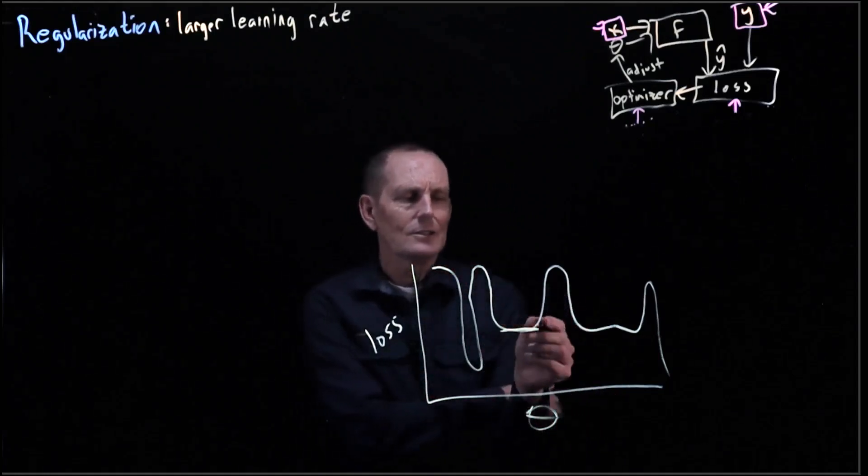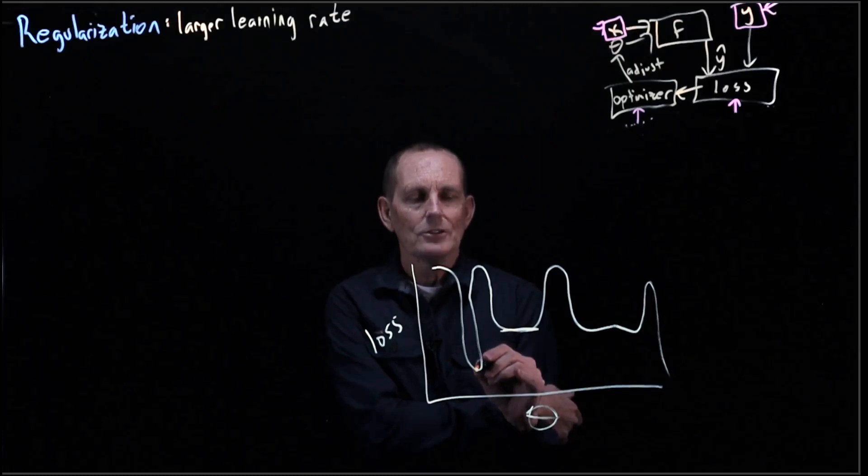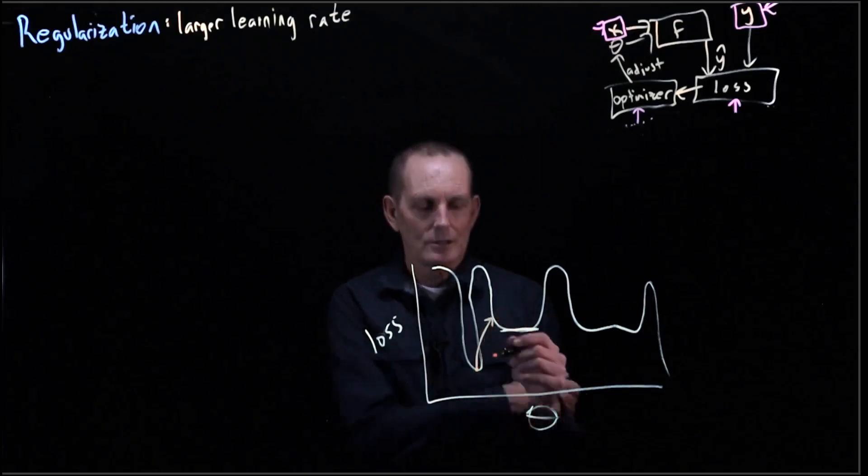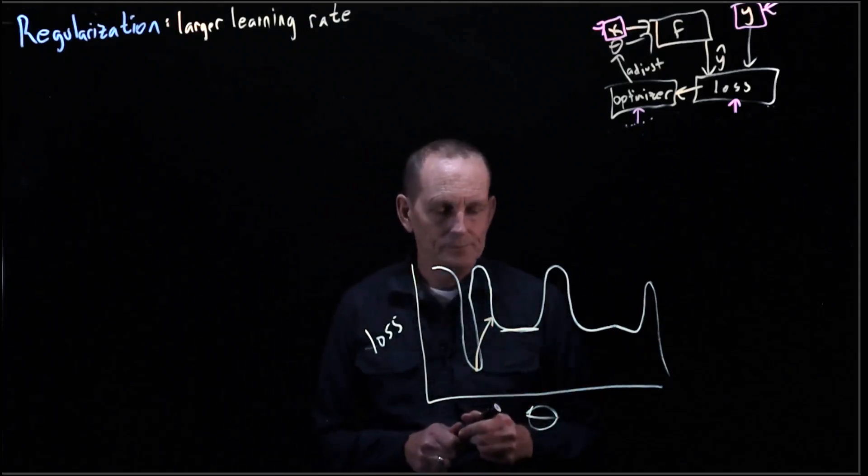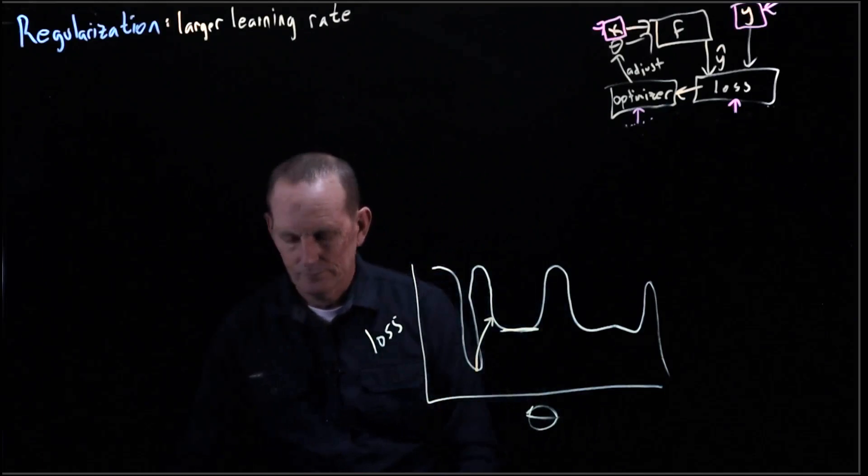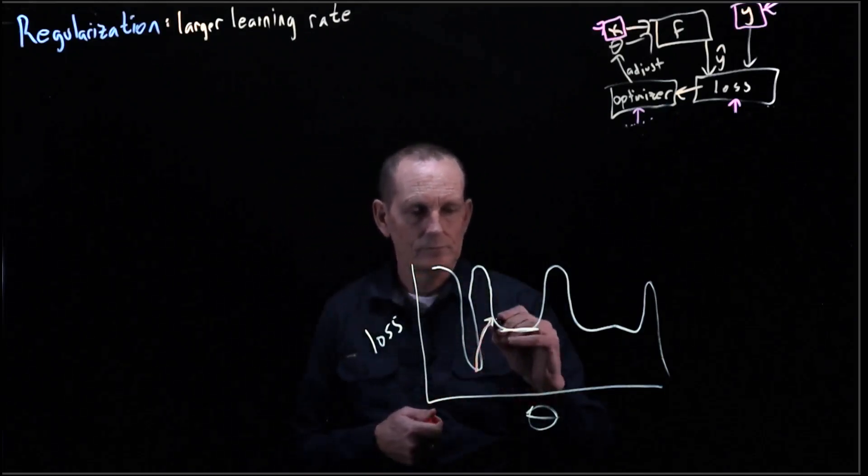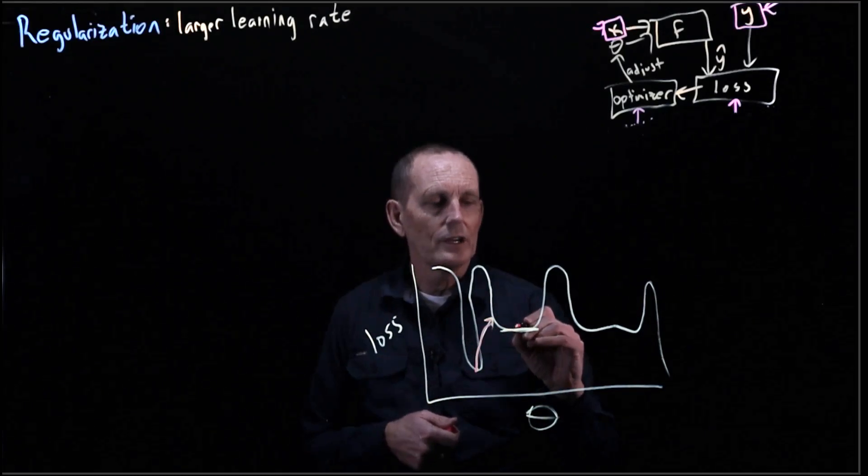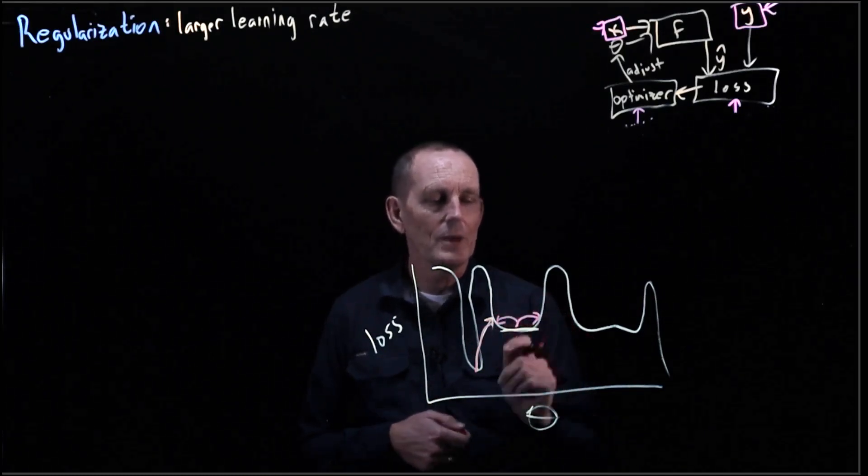And why would a large learning rate lead us to one of these? Well, because if we're here and we have a large learning rate, it may take us out, let's say to here. Or if we're here, our large learning rate may just go here or here and we can head back in here.